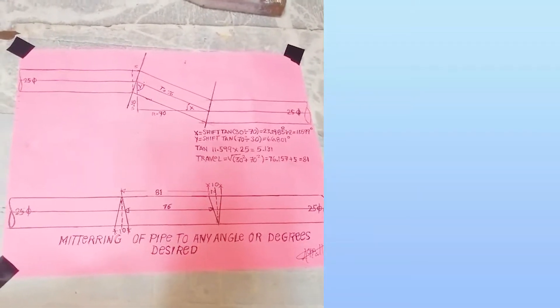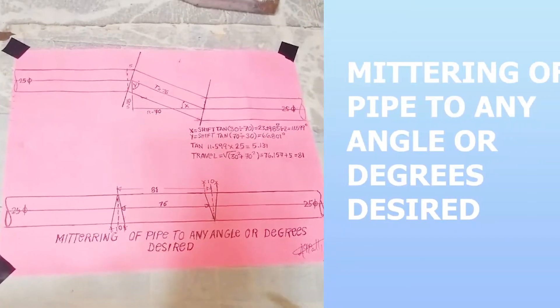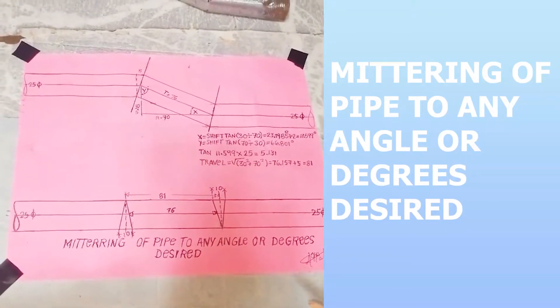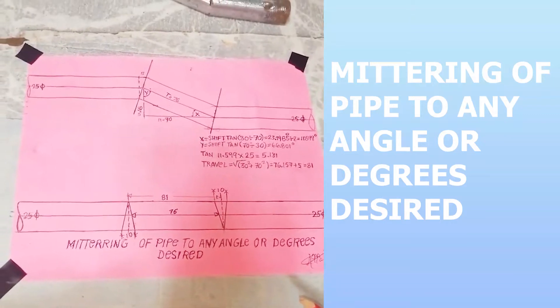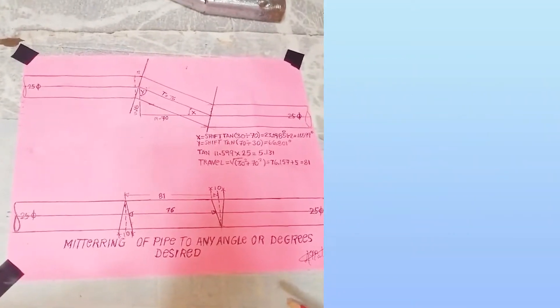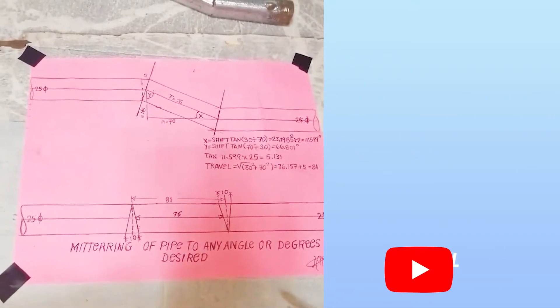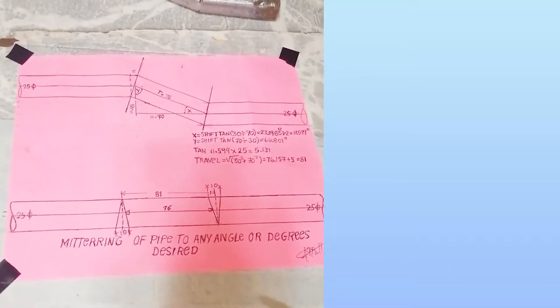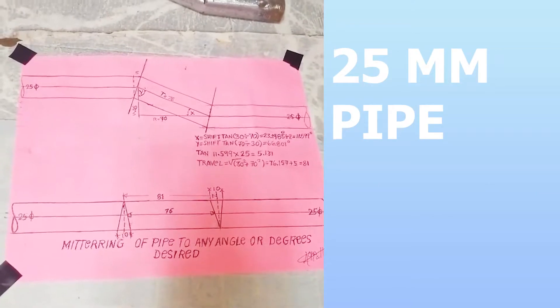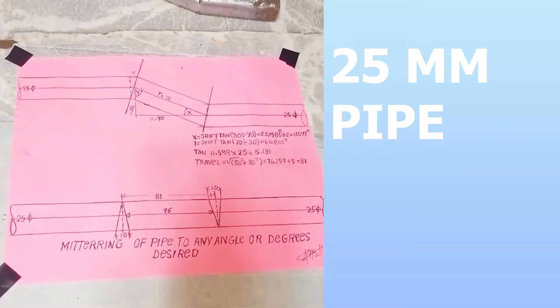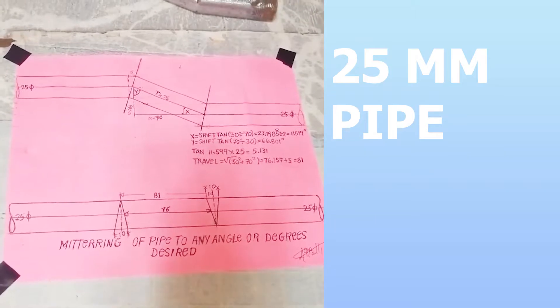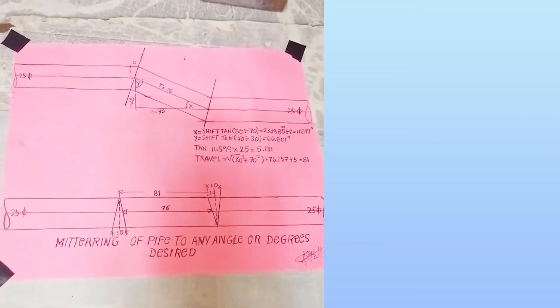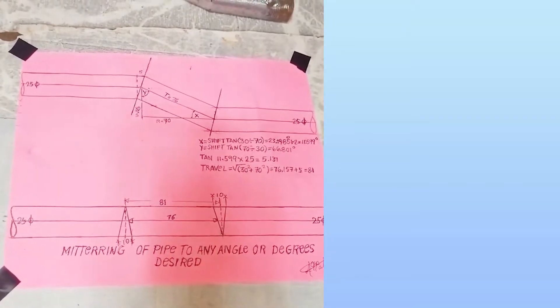Ito yung mitering of pipe to any angle or degrees desired. Kung ano yung angle na inihingi, katulad dito sa sample natin ito, ang tubo natin 25mm lang. I-mamiter natin kasi walang available na elbow, mag-mamiter na lang.